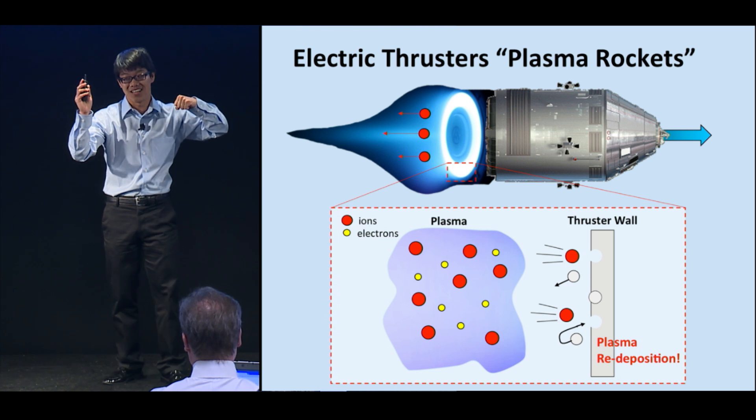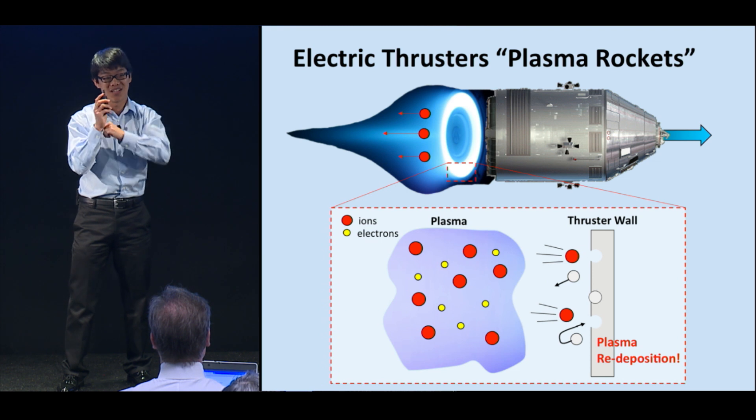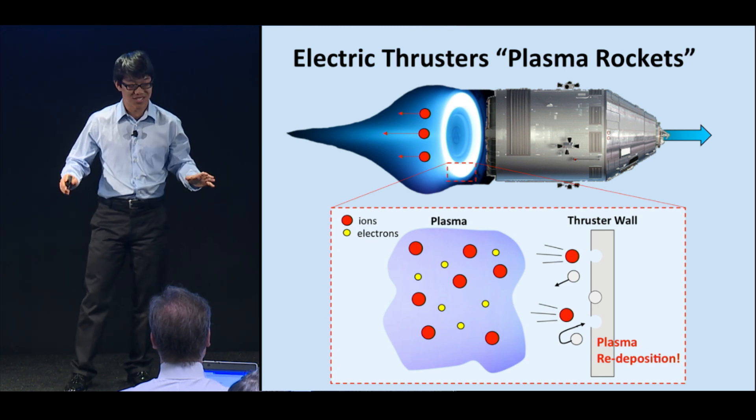When an ion hits the wall, a piece breaks off. And if enough ions hit the wall, eventually the wall will completely break, potentially causing your thruster to explode.